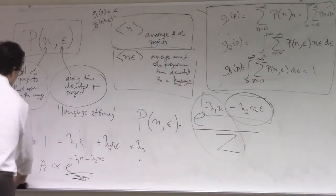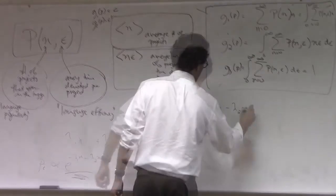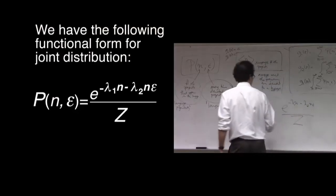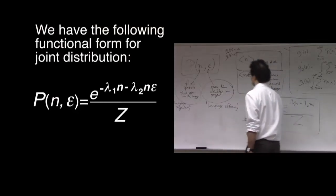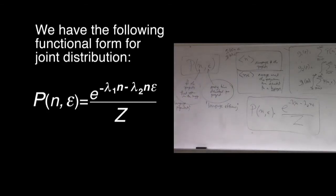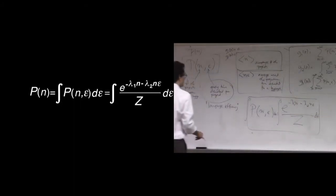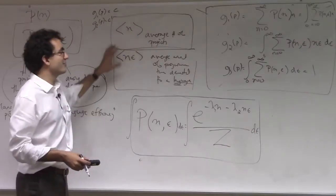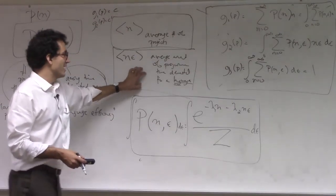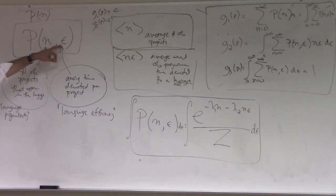So what we have now is the following functional form for the joint distribution of language popularity and language efficiency. And I'm going to do one more thing, which is I'm going to try to recover the original marginal distribution, pn, by integrating the joint distribution with respect to epsilon. So what I did was I built a more sophisticated model that had two constraints that constrained the average number of projects and the average amount of programmer time devoted to a particular language. And now what I'm going to do is integrate out this hidden variable.